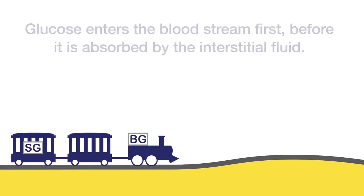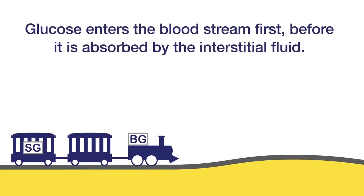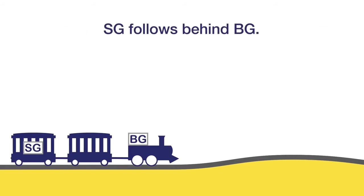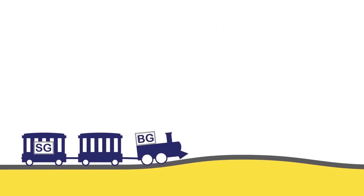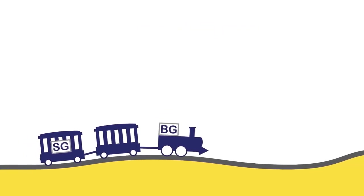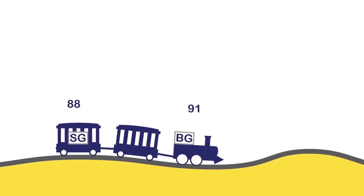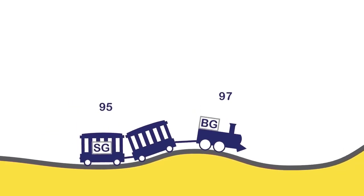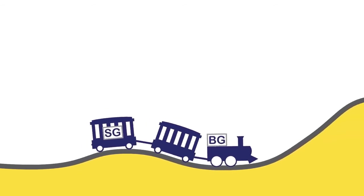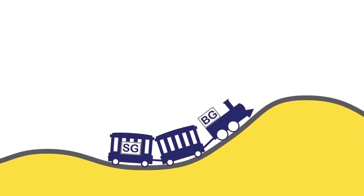As carbohydrate is digested, glucose enters the bloodstream first before it is absorbed into the interstitial fluid. So blood glucose is in the front of the train, and in the back of the train is the sensor glucose, or SG. Since glucose travels from the blood into the interstitial fluid, sensor glucose follows behind blood glucose. When the train is traveling along a flat plane, when there is little fluctuation in glucose levels, the blood glucose and sensor glucose readings will be very similar, although rarely exactly the same.